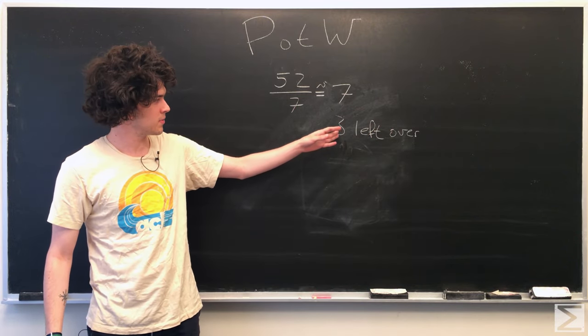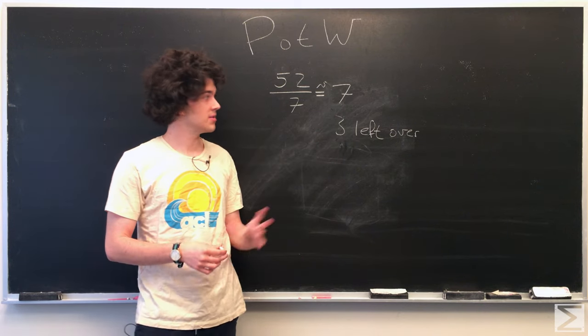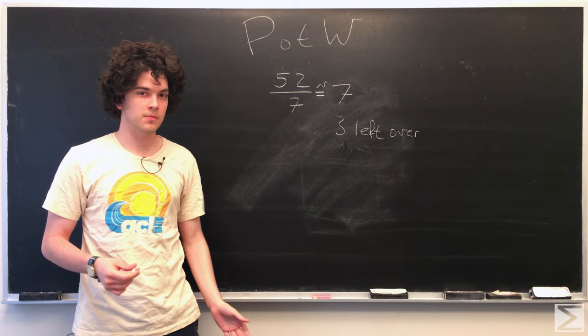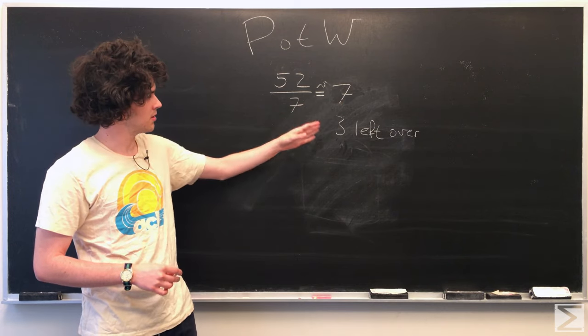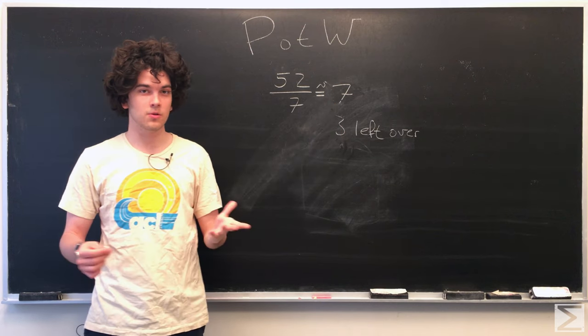But notice if this were, this could be any number less than seven. Because once it gets to seven, we just increase this by one. So just in general, we just want the nearest whole number because we're making whole ears of corn.